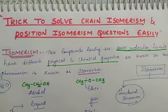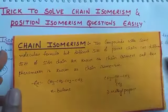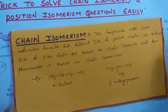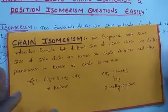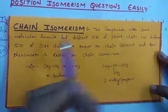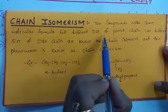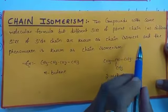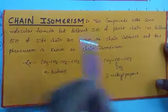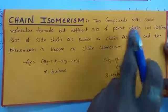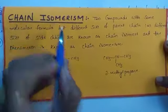Watch the video to the end and you will be able to solve chain isomerism and position isomerism questions on your own. There will be a test-yourself question at the end. Chain isomerism means two compounds with the same molecular formula but a different size of parent chain or different size of side chain. Those two are known as chain isomers.